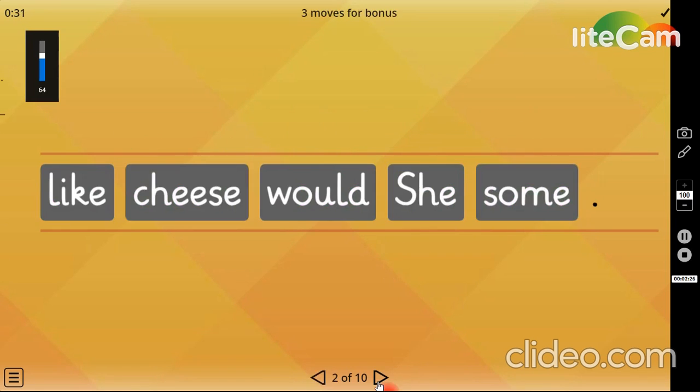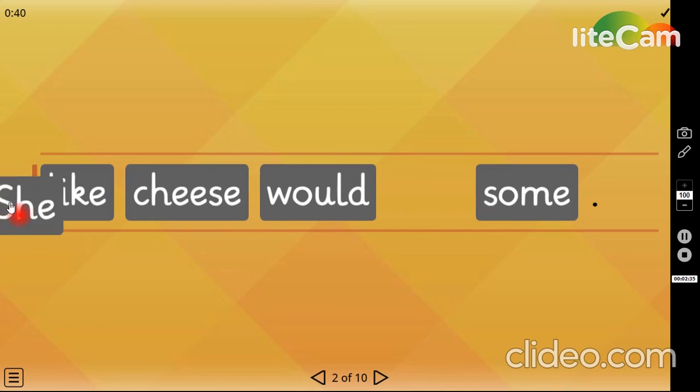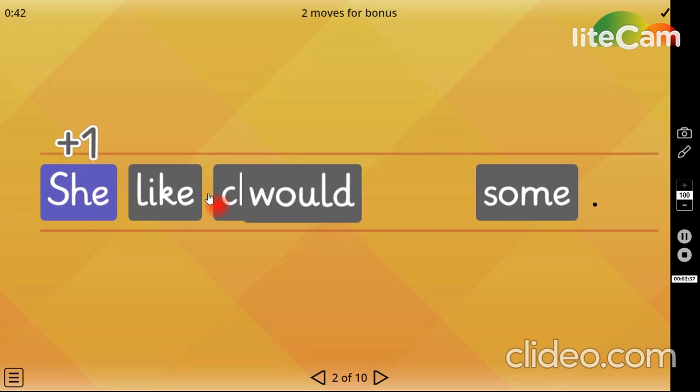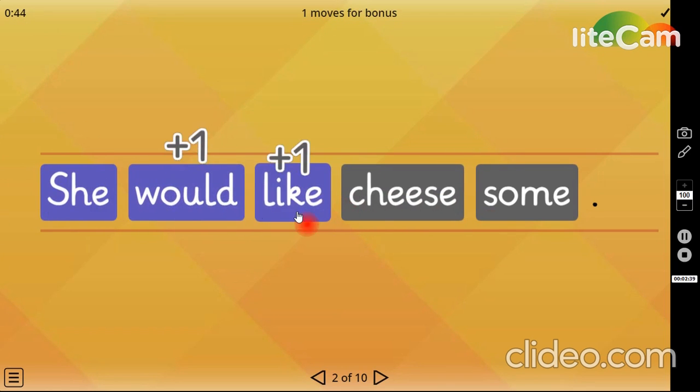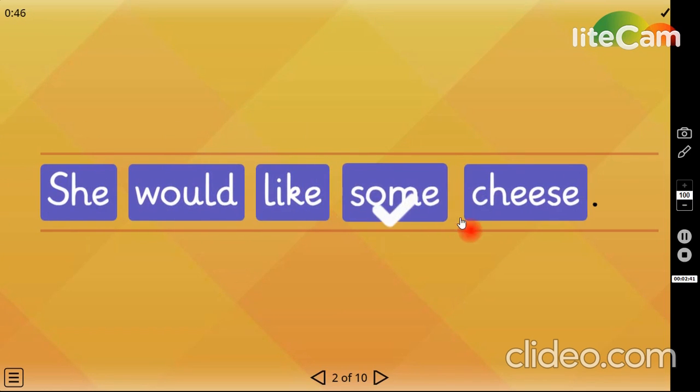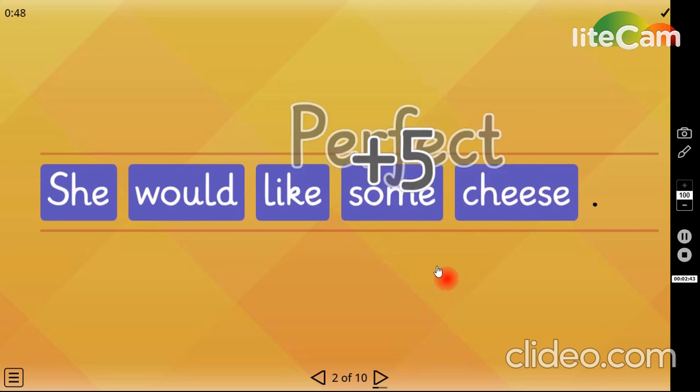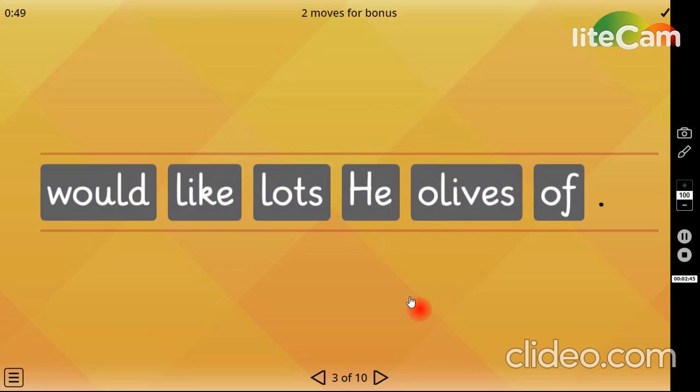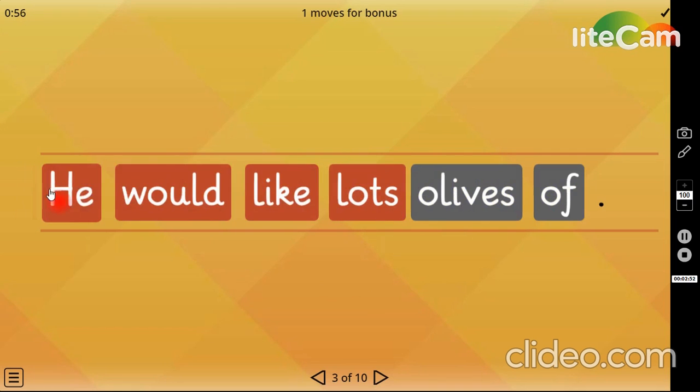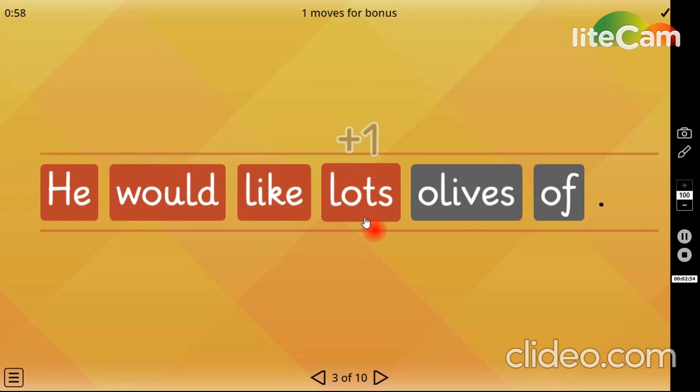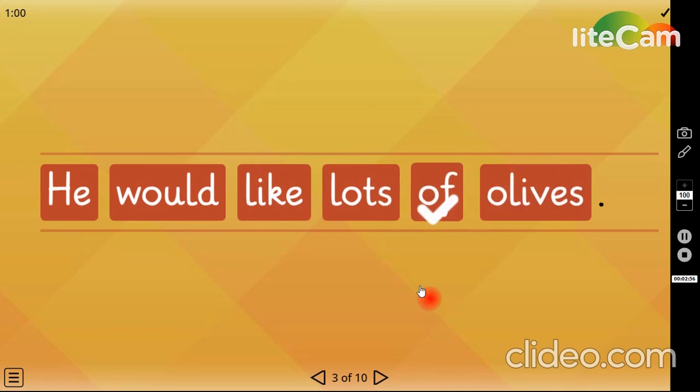Brilliant. Now here we have: She would like some cheese. Brilliant. Now the third one: He would like lots of olives.